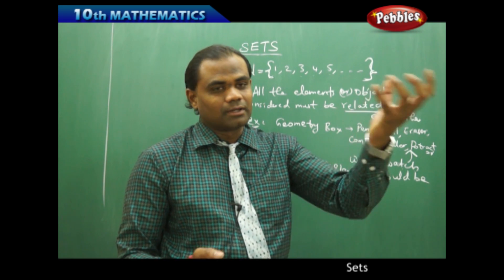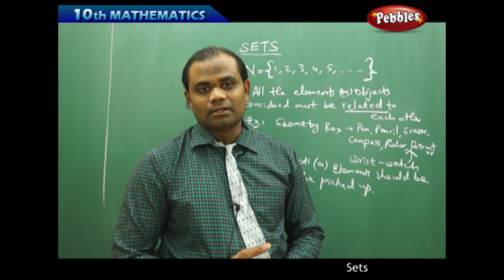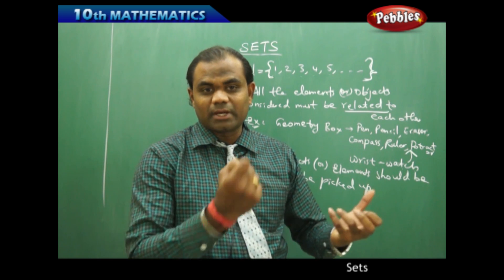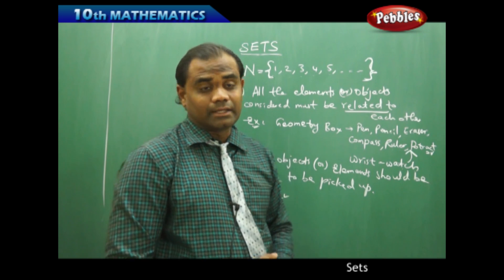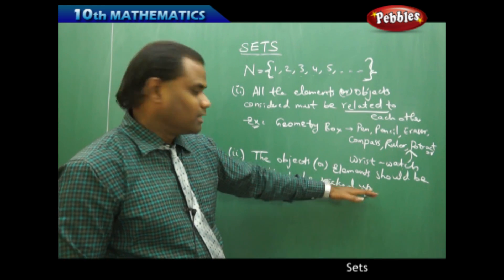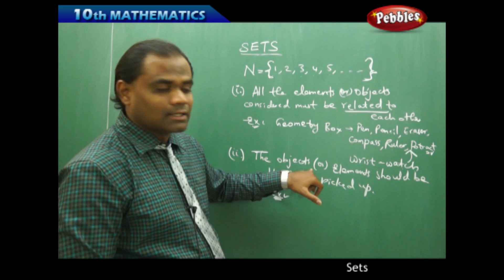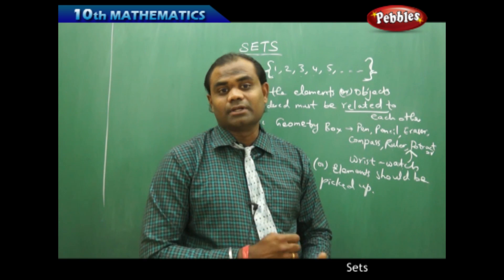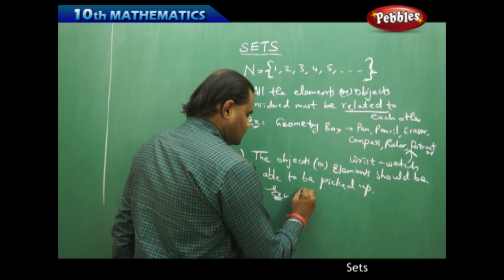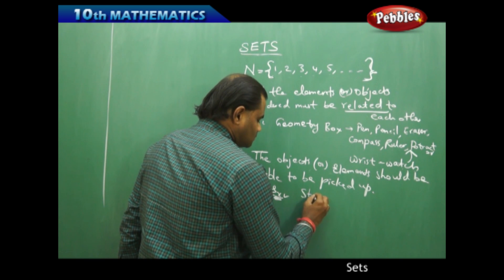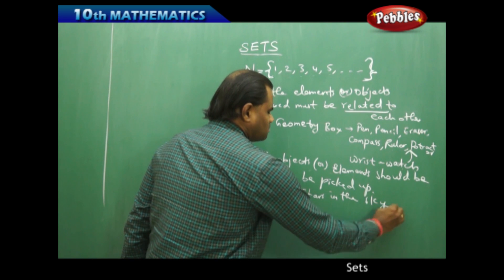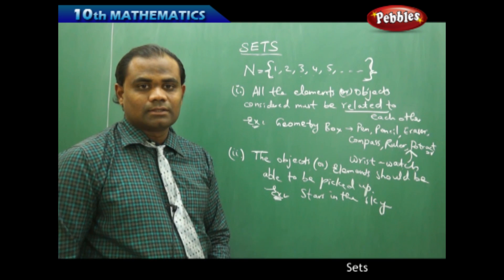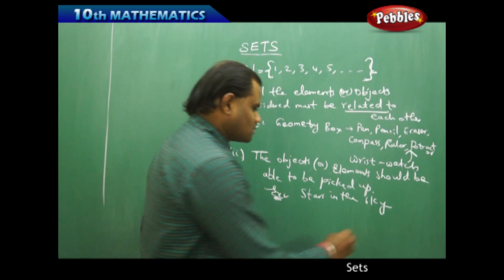Because when I take the example of stars in the sky, it may not form a set because it is very difficult to pick the different stars in the sky. There are infinitely many stars. So picking up of stars in the sky may not be a set based on the second limitation which states that the objects or elements should be able to be picked up. For example, stars in the sky may not form a set. So this doesn't form a set.